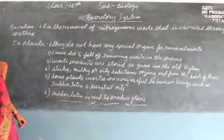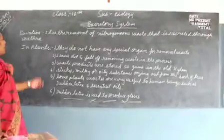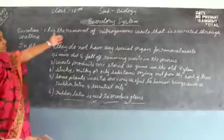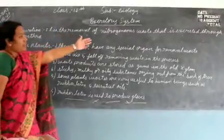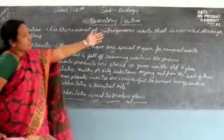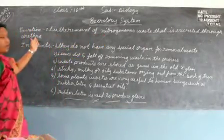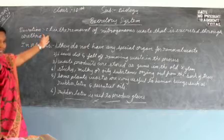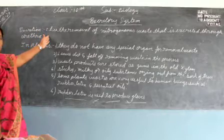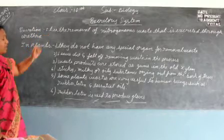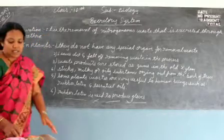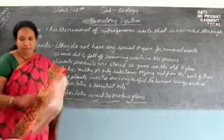Now what is excretion? Excretion is the removal of nitrogenous waste that is excreted through the urethra, which takes place in human beings. Now let us understand the process.